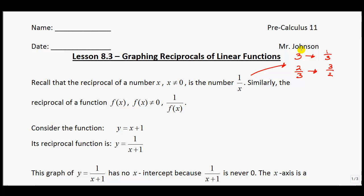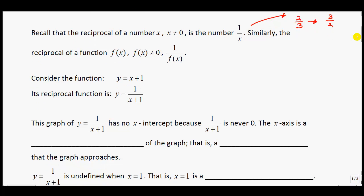Similarly, we can say the same thing with functions. The reciprocal function of f of x, such that f of x cannot equal 0, is 1 over f of x. So if we ever want to know what the reciprocal function is, we just put a 1 over top of it. For example, if we consider the function y equals x plus 1 — that's just a linear function — and if you want the reciprocal function, all you do is put the 1 over top of it.